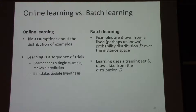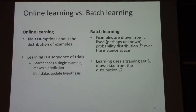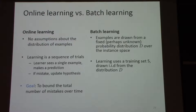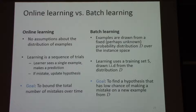In online learning, learning was framed as a series of trials — an iterative process where the learner gets an example, makes a prediction and probably a correction. In batch learning, all we assume is that the learner gets a block of examples, a batch of examples that are drawn independently and identically distributed. In online learning or the mistake-bound version of online learning, the key question was to get a bound on the number of mistakes the learner makes. In the batch learning setting, our goal is to find a hypothesis that has a low probability of making an error in the future. Questions?